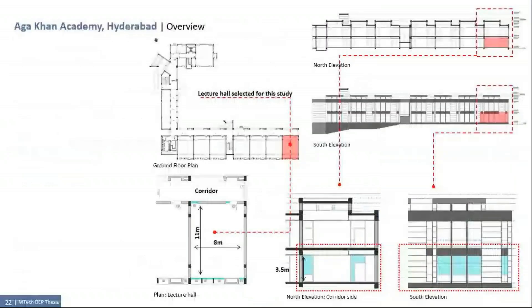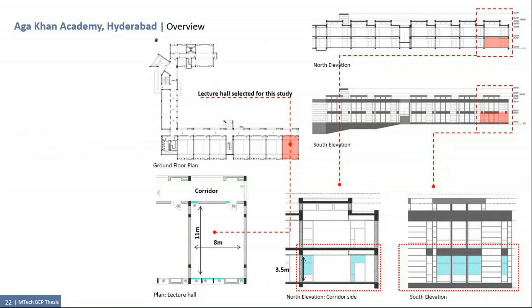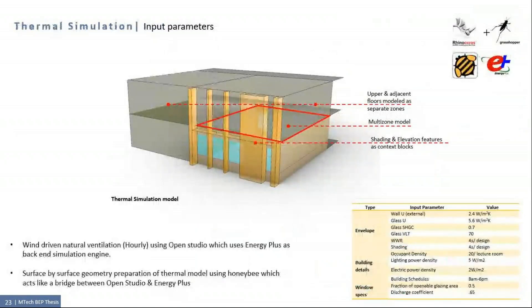The Aga Khan Academy in Hyderabad has been selected as a building to be used for this methodology. It is a 3500 square meter institutional building. A lecture room on the ground floor has been selected for the analysis and has the orientation as shown. A multi-zone thermal model using Honeybee has been created. The upper and adjacent classrooms were also modeled as seen in the figure as separate zones. And the input parameters for the envelope and the way the window operates has been shown on the table on the right.